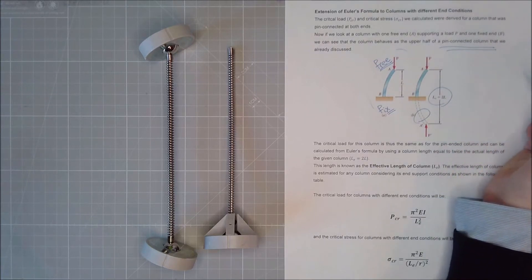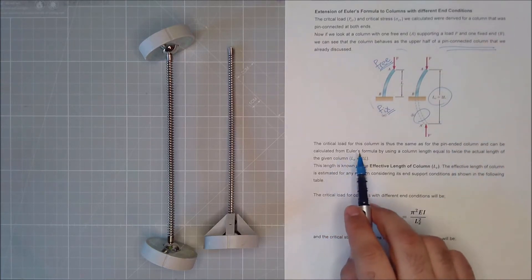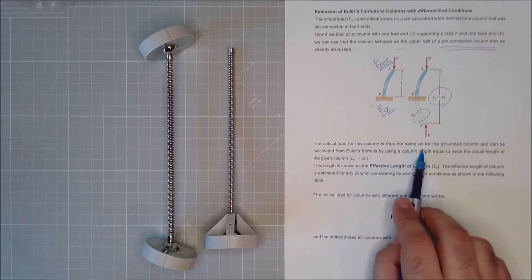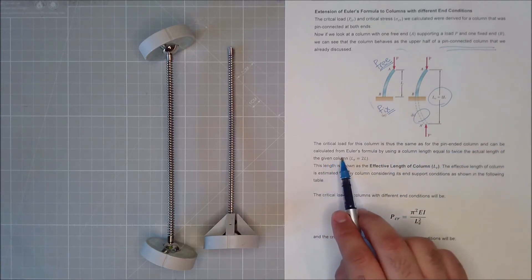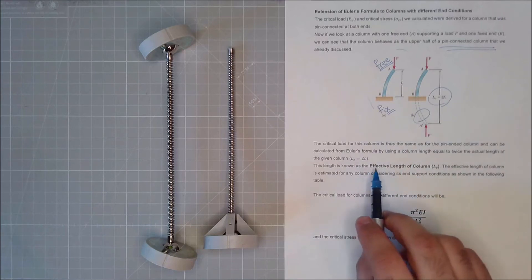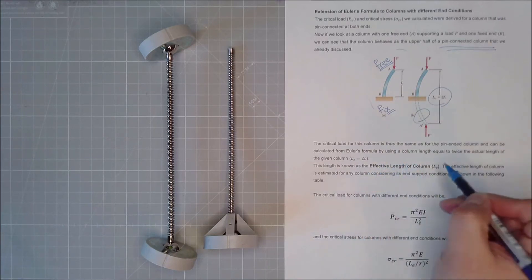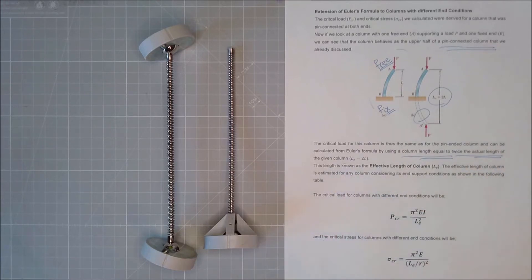The critical load for this column is thus the same as the pin ended column and can be calculated from Euler's formula by using a column length equal to twice the actual length of the given column.